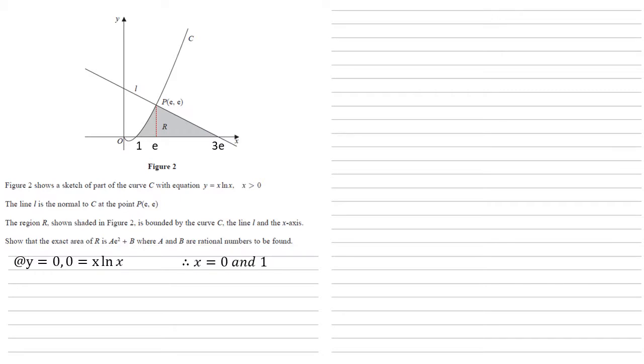So to find the area, we're now going to integrate the curve x ln x with respect to dx between the bounds of 1 and e. We're going to integrate by parts to do this. So if we let u equal ln x, we let dv/dx equal x, then du/dx equals 1 over x and v equals a half x squared.